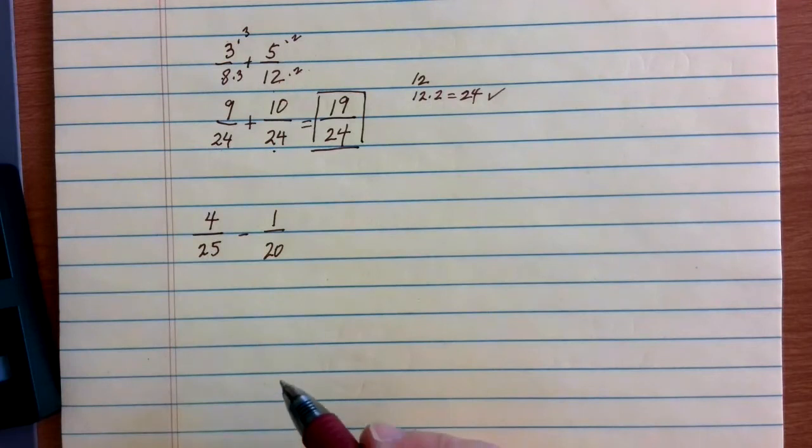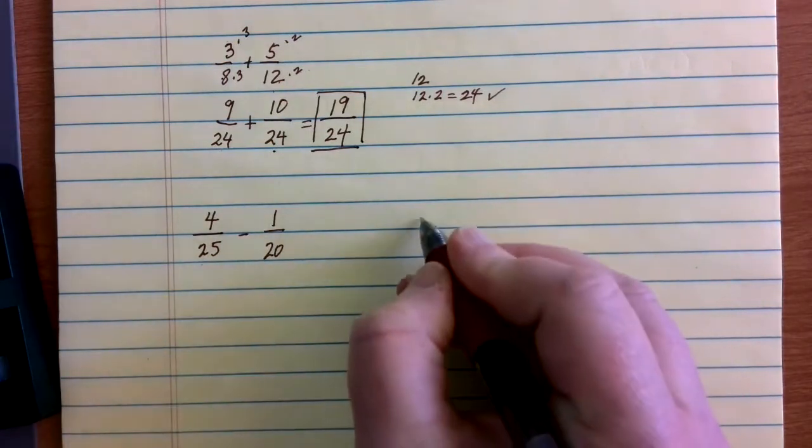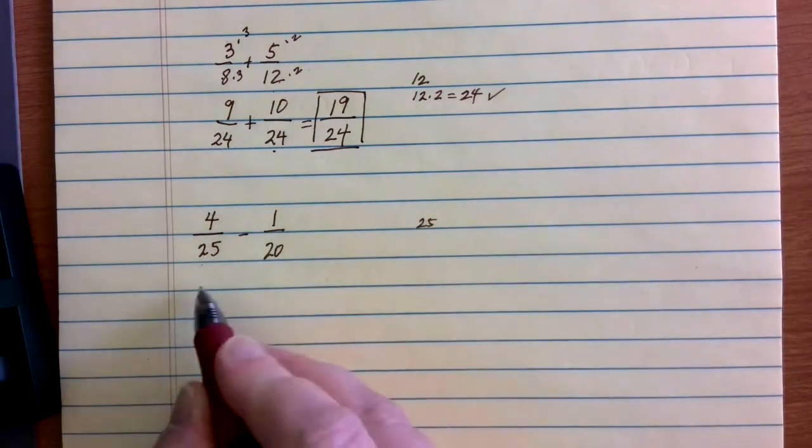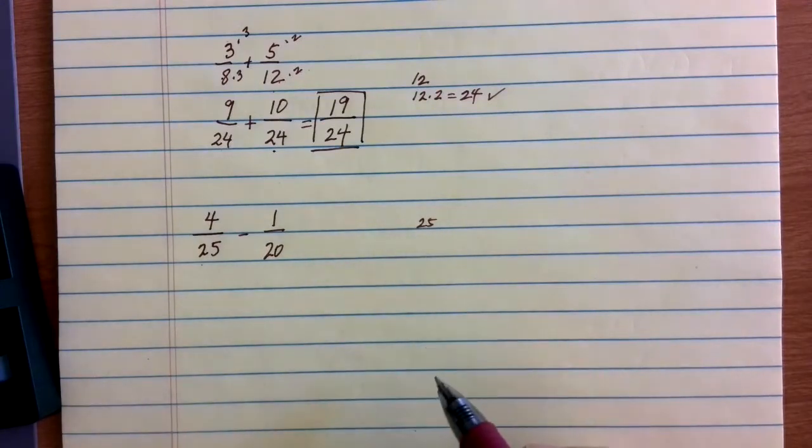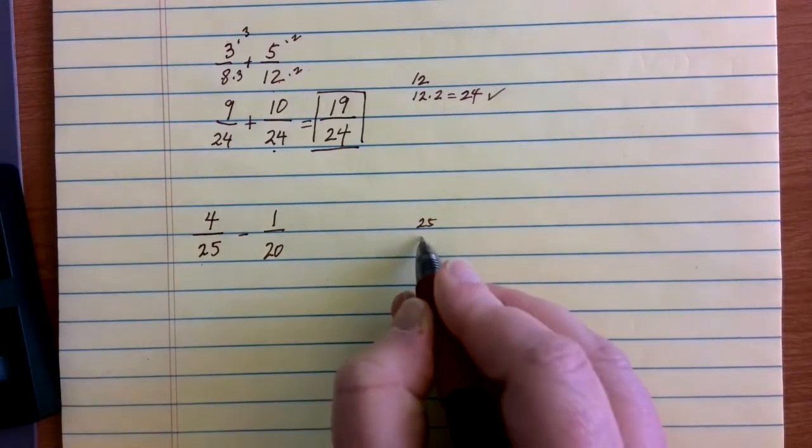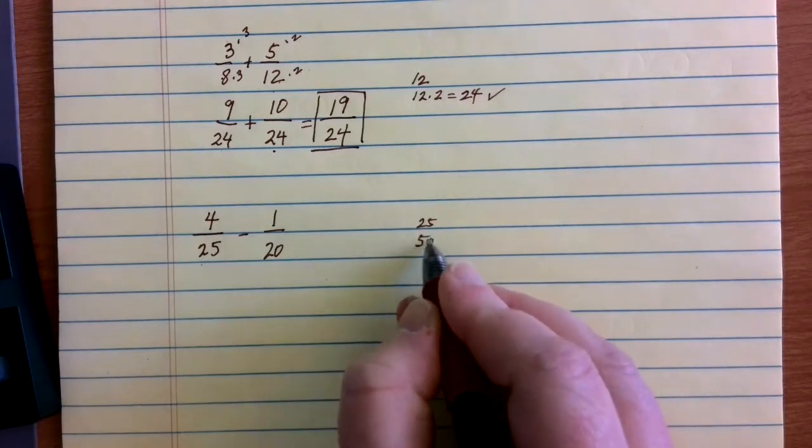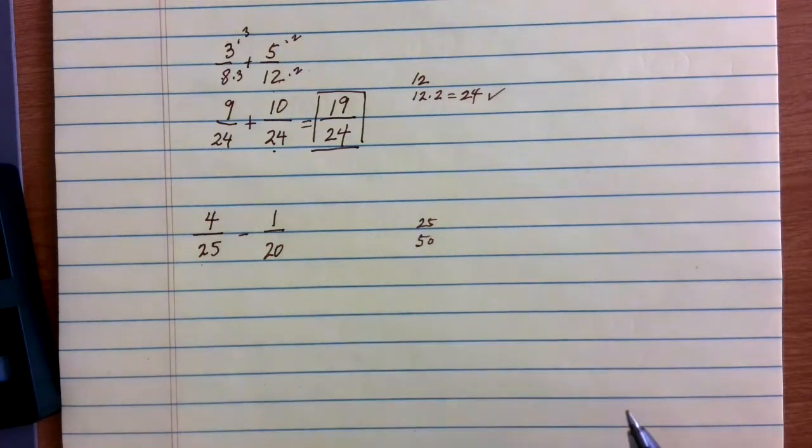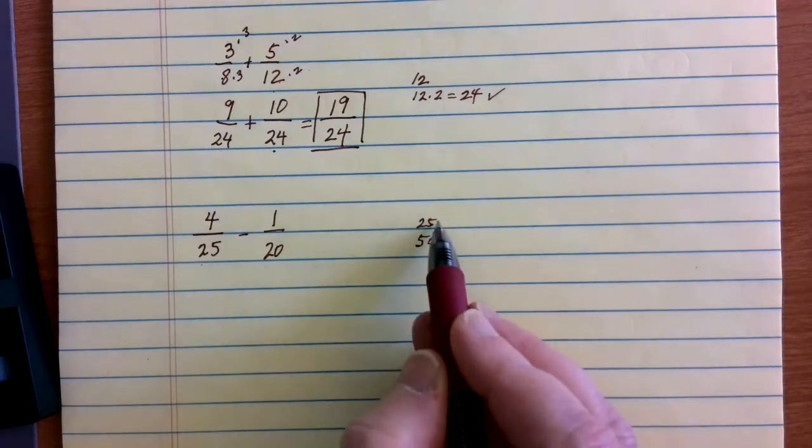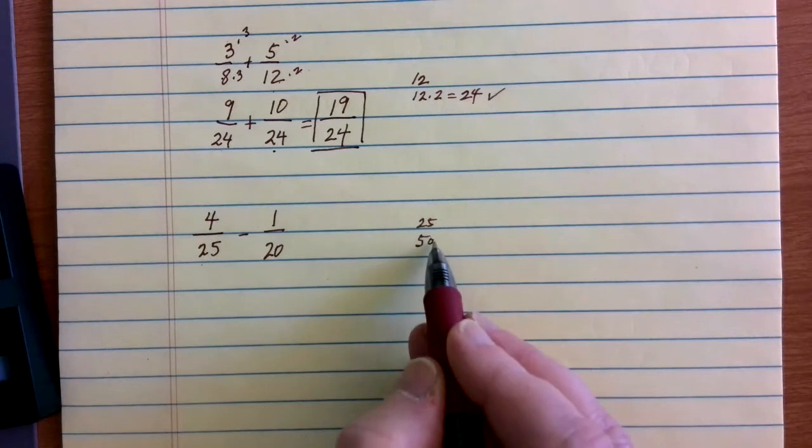I'm going to go ahead and use the same process I used before: start with the largest number, which is 25. 20 does not go in evenly into 25, so let's look at the next multiple of 25. 25 times 2 gives me 50. 20 does not go into 50 evenly—that goes in 2.5 times, so not good enough.